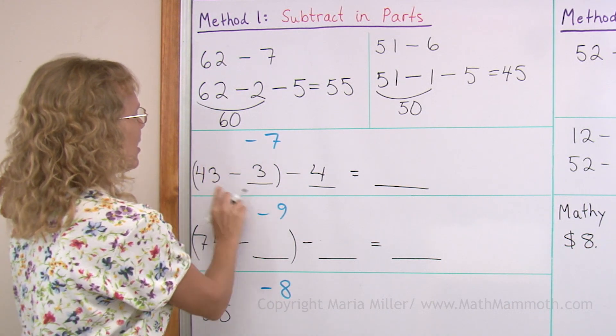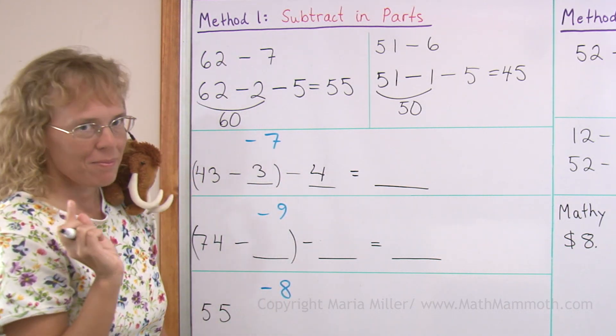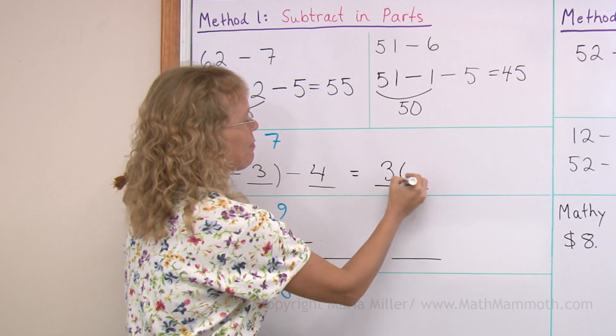Because we subtract 3 and 4 so that we subtract a total of 7. So this is 40, this here. And 40 minus 4, 36.